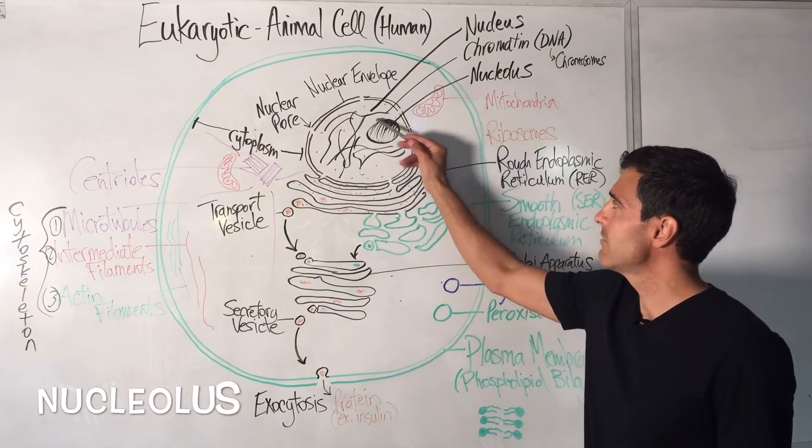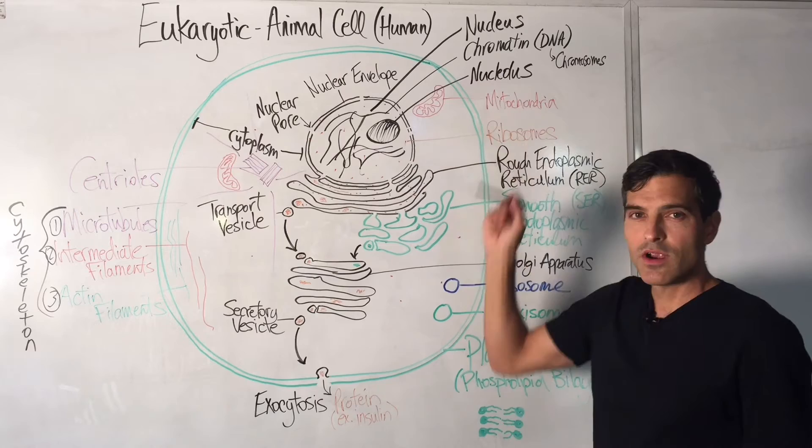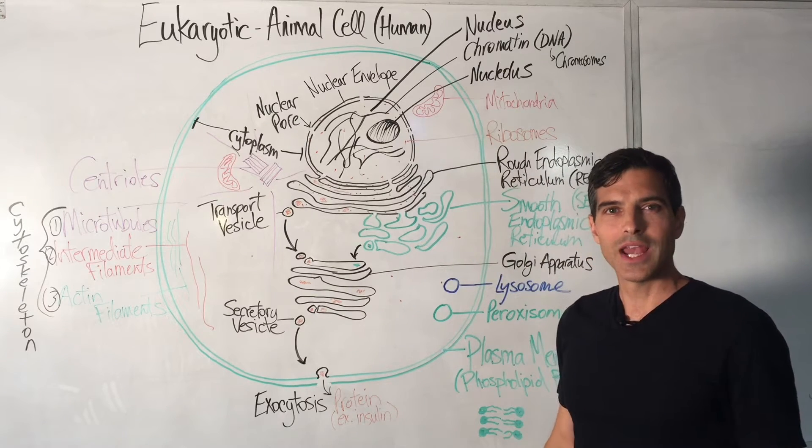You also have the nucleolus right here, and that's where ribosomal RNA is made.